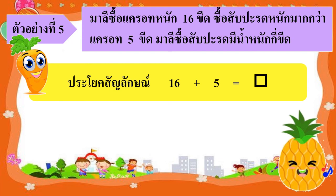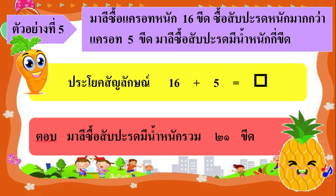เรามาหาคำตอบของประโยคสัญลักษณ์ 16 บวก 5 เท่ากับเท่าไรคะเด็กๆ ช่วยคุณน้องคิดหน่อยคะ เท่ากับ 21 นั่นเอง จึงทำให้เราสรุปได้ว่า มารีซื้อสับปะรดมีน้ำหนัก 21 ขีดนั่นเอง สรุปคำตอบเป็นตัวเลขไทยกันด้วยนะคะ